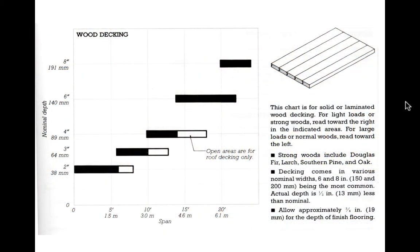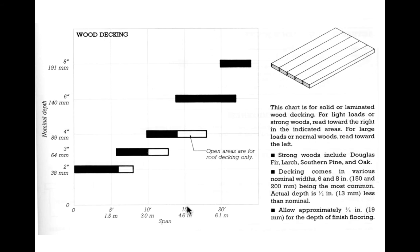Here's our first table — span across the bottom, depth up the side — telling us the safe depth of a given material for a given span. We get wood decking in a handful of dimensions: two inches, two-and-a-half inches, four inches, and so on. Safe load in black for floors and in white for roof decks, since roofs typically have about half the live load of floors. For a five-foot span, a two-inch deck is safe for a floor; at ten feet we need about a three-inch deck. Decking thickness increases quickly, so we tend to keep decking over fairly short spans and get into joists or beams as quickly as we can.